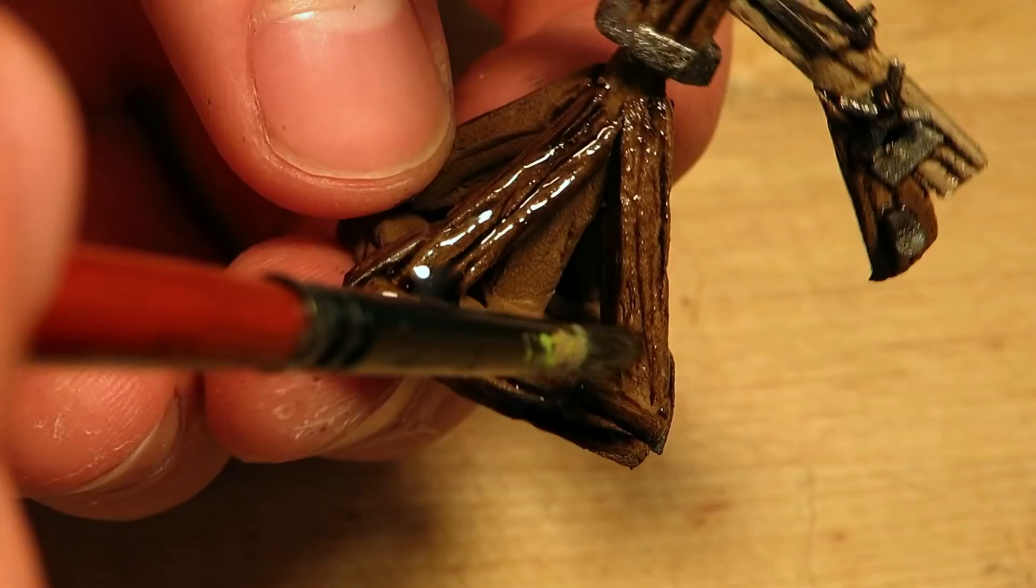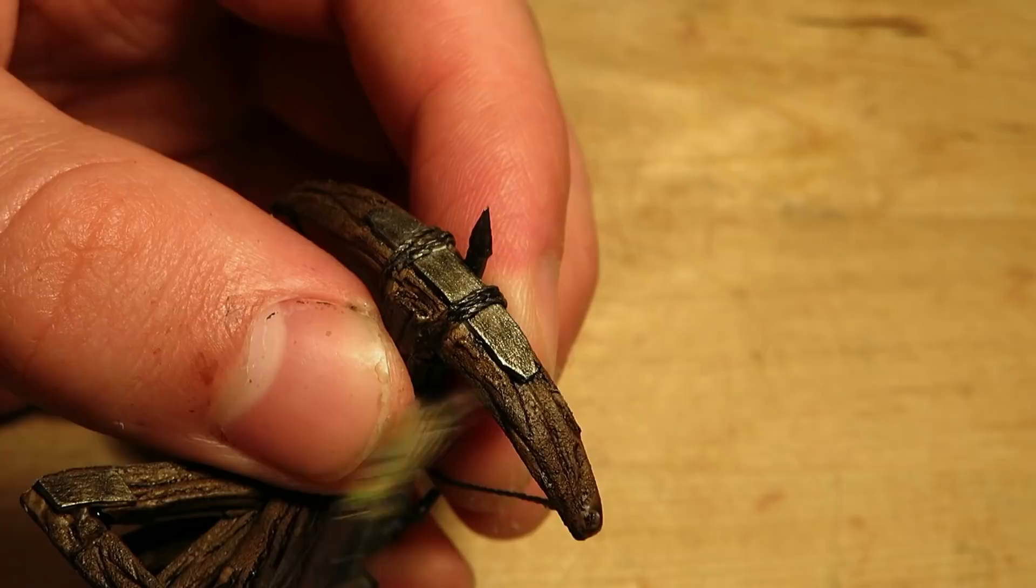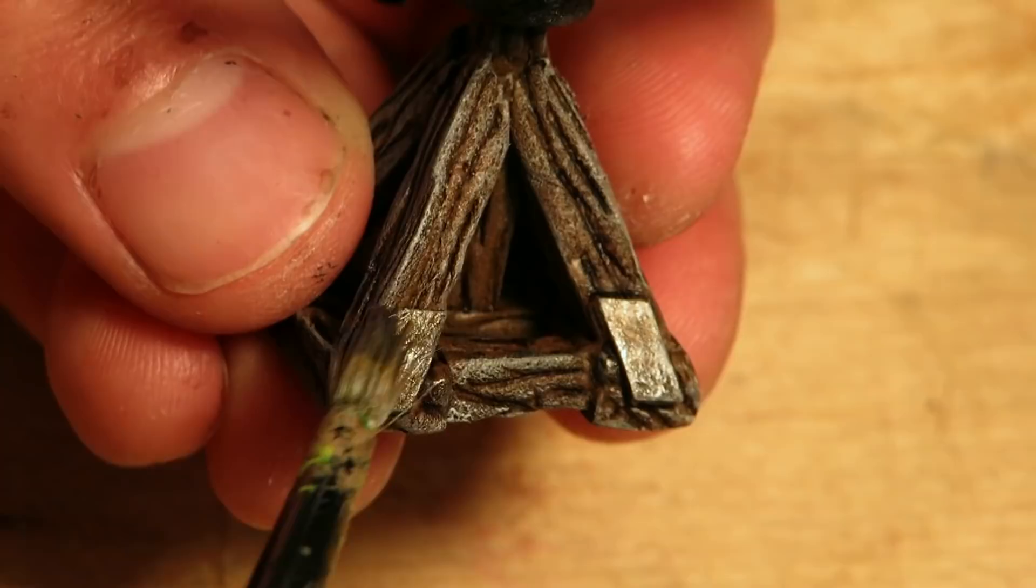Now that the wash has dried I will gently dry brush the wood with drake tooth. The metal parts were dry brushed with the same gunmetal we used earlier.